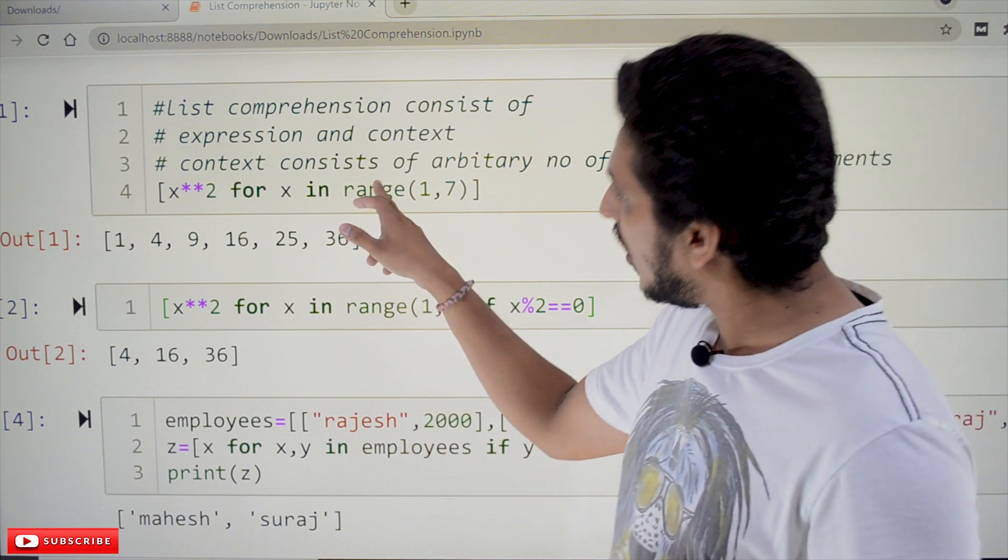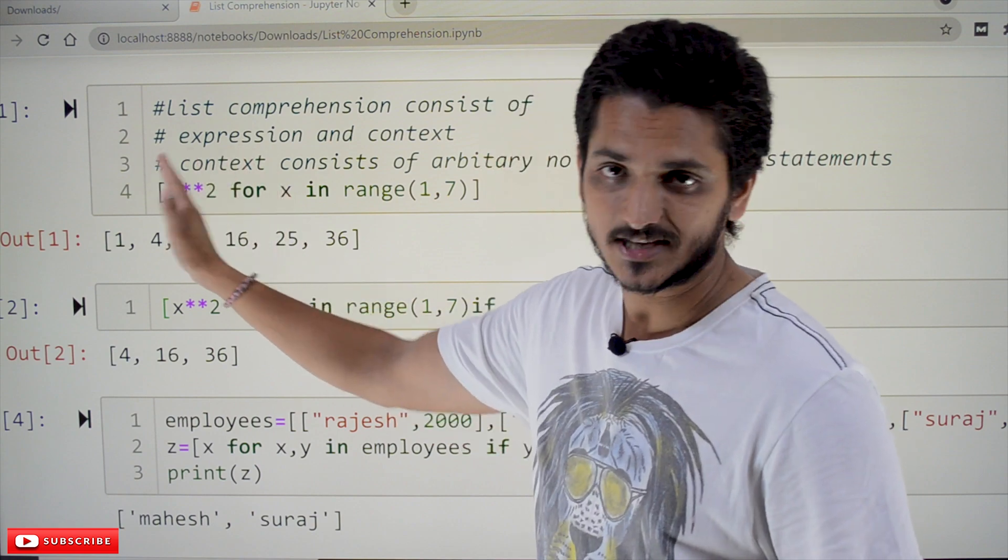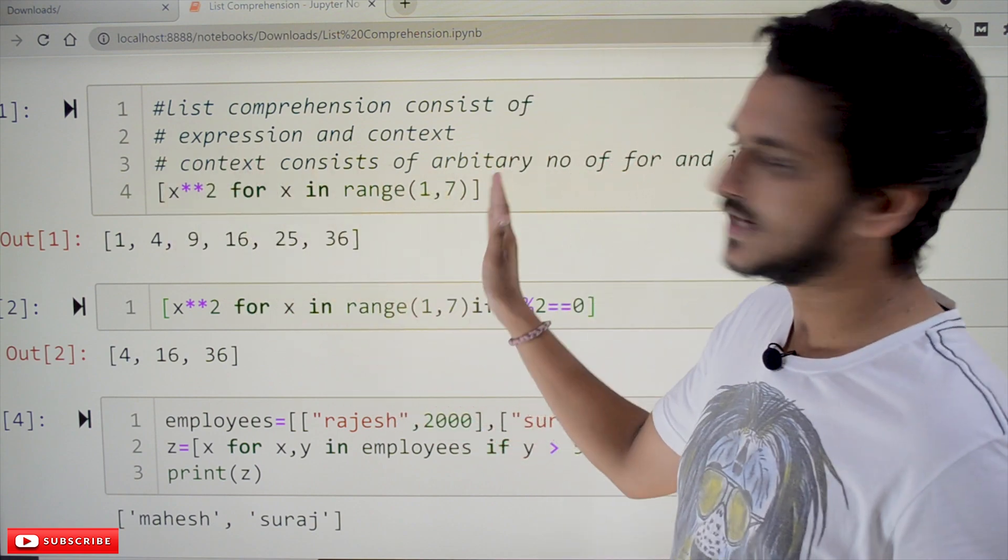5, up to 6 and on this, it will apply x power 2. So, this part we call it as expression and this part we call it as context.